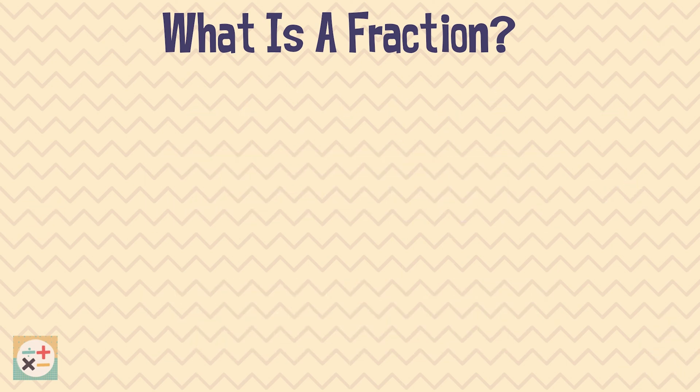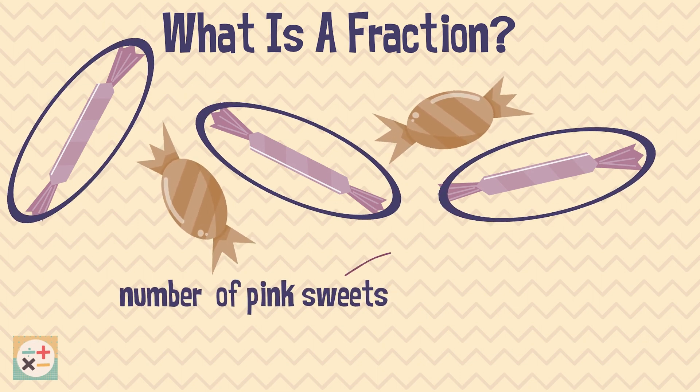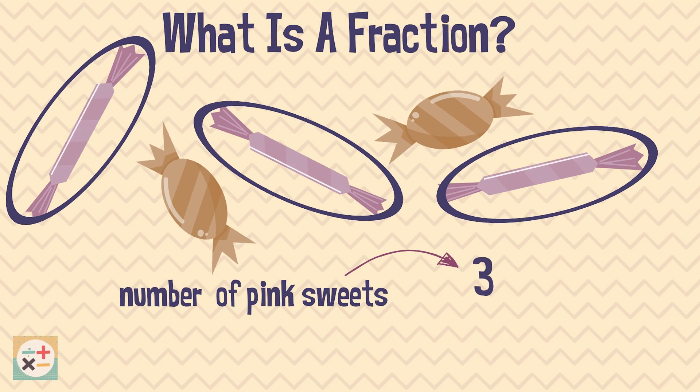So how do you write a fraction? Let's say you have five sweets in total. Three out of five sweets are pink, so we can write that as three over five.